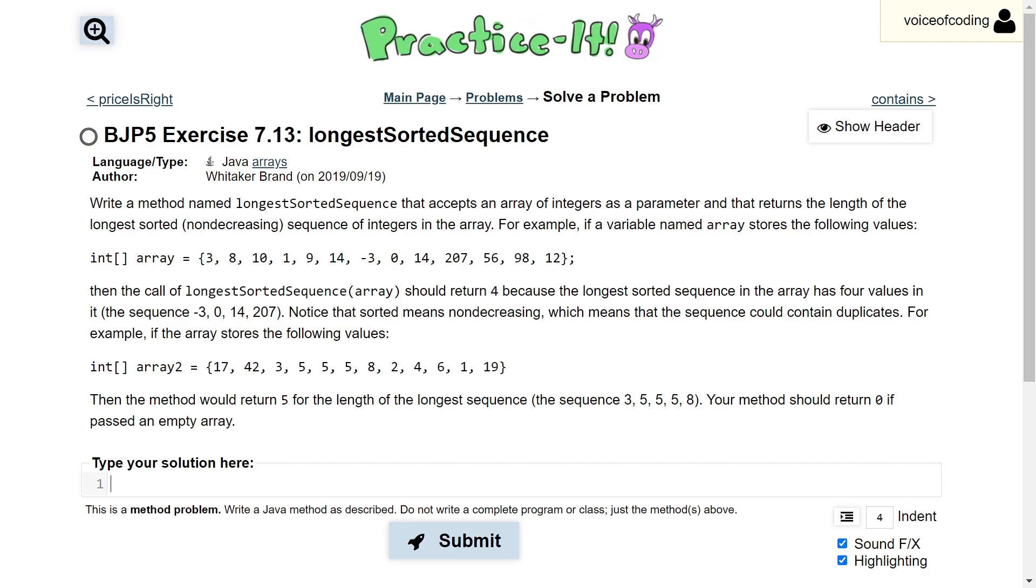Notice that sorted means non-decreasing, which means that the sequence could contain duplicates. For example, if the array stores the following values: